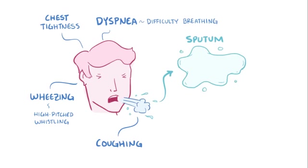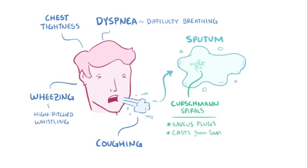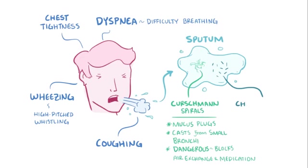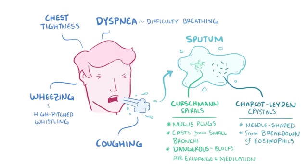Occasionally in the sputum there might be Kirschmann spirals, which are spiral-shaped mucus plugs or basically elongated mucus casts from the small bronchi of people with bronchial asthma. Mucus plugs can be particularly dangerous because they not only block exchange of air, but they also block inhaled medications from getting to the site of inflammation. The mucus might also have Charcot-Leyden crystals, which are shaped like needles and are formed by the breakdown of eosinophils.